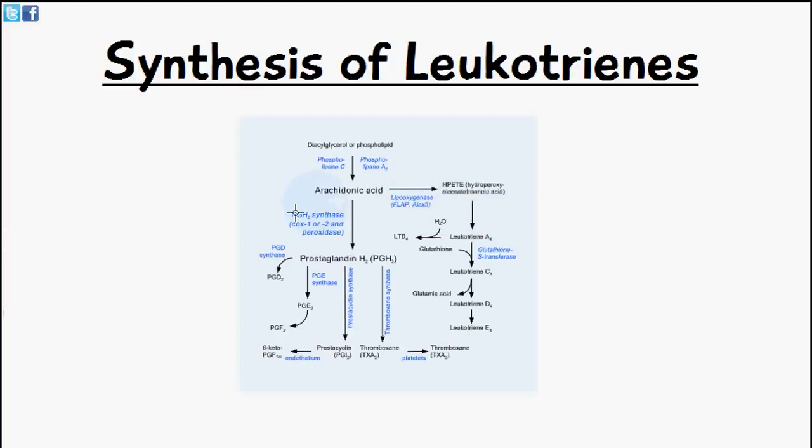So an example of this is the enzyme 5-Lipoxygenase converts arachidonic acid into 5-HPETE, as you can see here, and this is short for 5-Hydroxy-6,8,11,14-Eicosatetraenoic Acid.